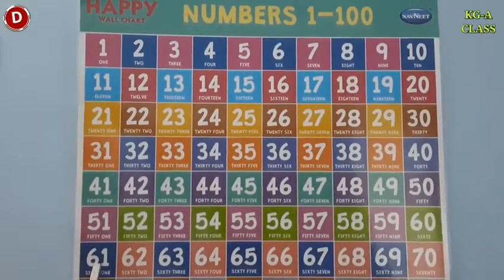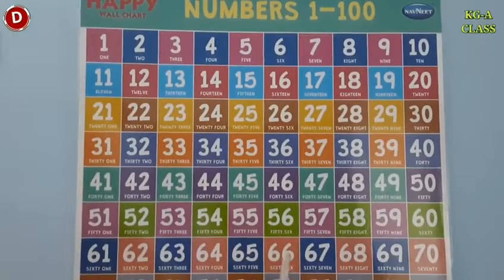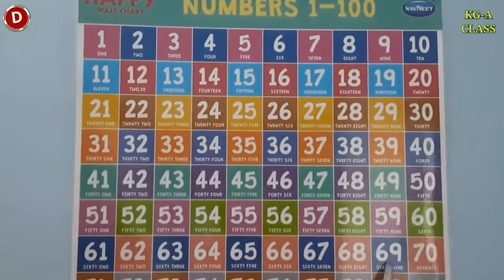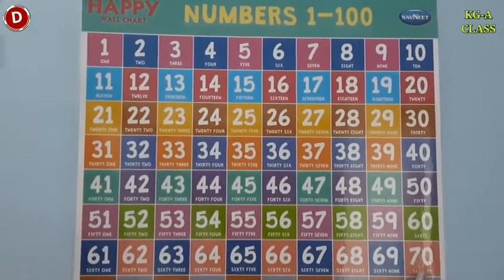After 60 children comes 61, 62, 63, 64, 65, 66, 67, 68, 69 and 70. In this way, you have to learn number counting 1 to 70.